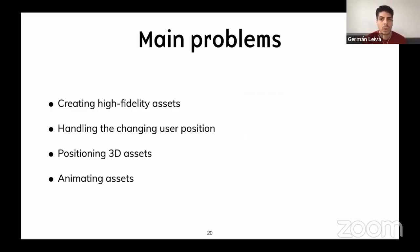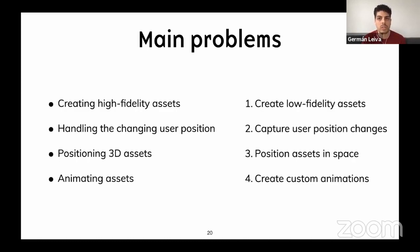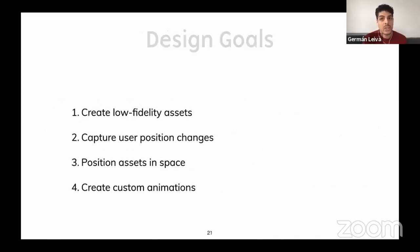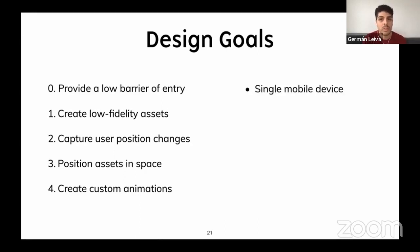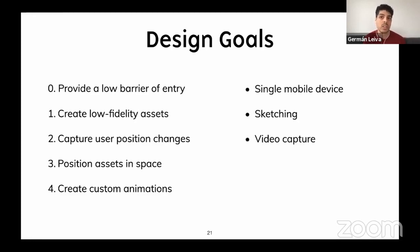To tackle these problems, we propose the following goals. One extra implicit goal is providing a lower barrier of entry to any stakeholder. To achieve this, we made the following decisions: we will use a single mobile device to provide a low barrier of entry, use sketching to create low-fidelity assets, use video to capture the always changing position of the user, and direct manipulation through demonstration to position assets and animate them.